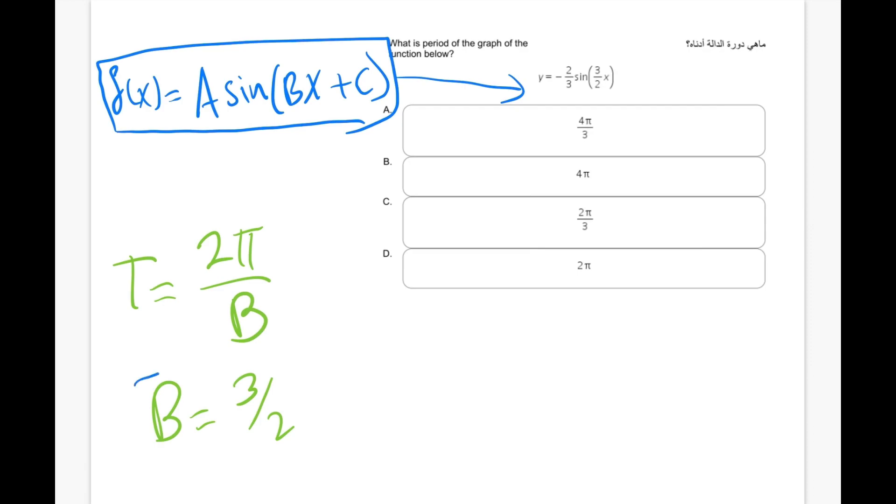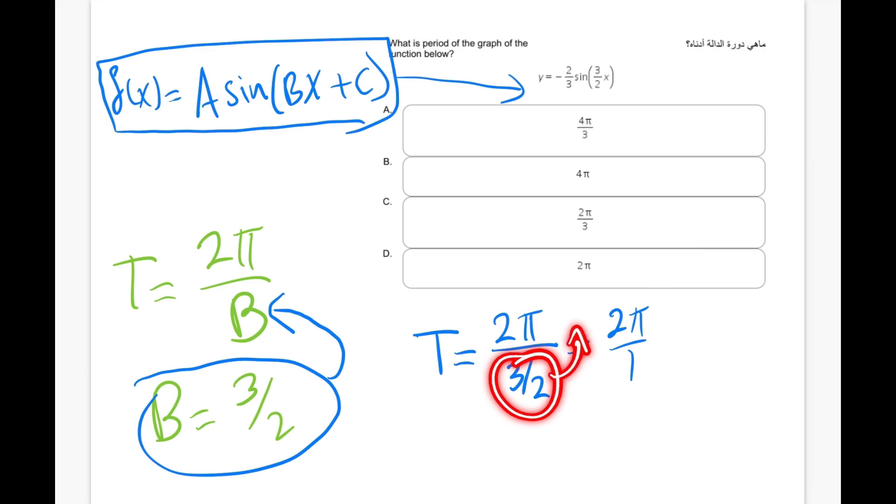What we need to do right now is take the b and replace it back into the equation for the period such that we have the following equation. The period equals 2π over 3 over 2. So if you're going to simplify this, we are going to say 2π over 1. Now we need to take the 3 over 2 to this side to simplify the multiplication, but we need to flip it. In this case, we're going to say multiply it by 2 over 3. This is a shortcut for dividing by fractions.